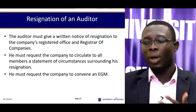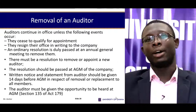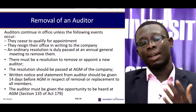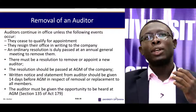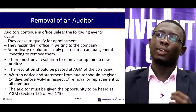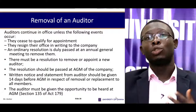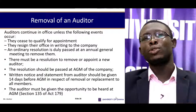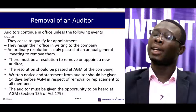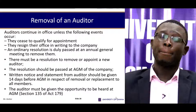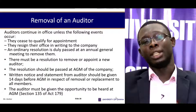The auditor must request the company to convene an emergency general meeting. Auditors can also be removed. Based on the code, auditors are removed when they cease to qualify for appointment, when they resign, or when an ordinary resolution is duly passed at an annual general meeting. There must be a resolution to remove or appoint a new auditor, passed by the AGM. Written notice and a statement from the auditor must be given 14 days before the AGM to all members. The auditor must be given the opportunity to be heard at the AGM when being removed.